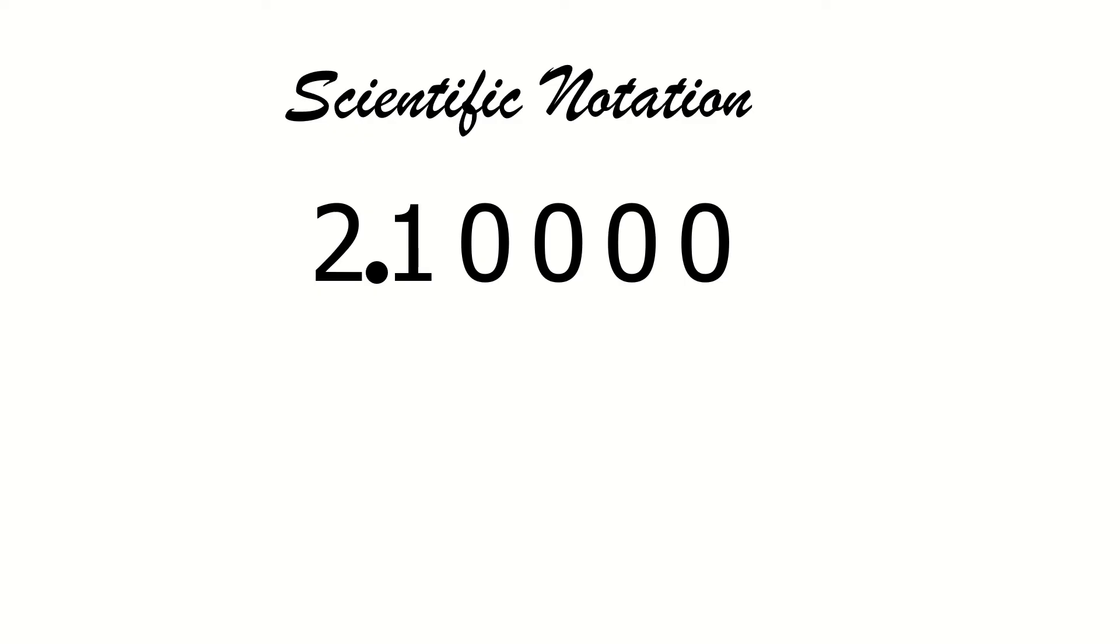Next step is, you're going to count the number of decimal places from the original decimal point. In this whole number, the original decimal point will be at the last part, at the end or at the right side of your last zero digit. So right here. You're going to count the number of decimal places. Let's do it together. That would be 1, 2, 3, 4, and 5. That means there are 5 decimal places. The direction is to the right of your new decimal point. That means your exponent will be positive. Positive 5.